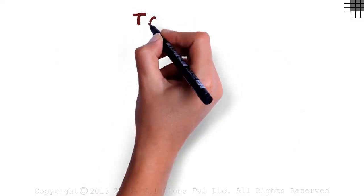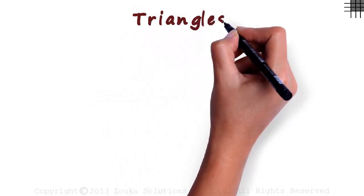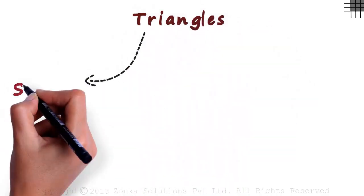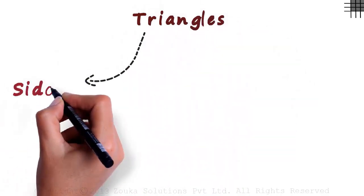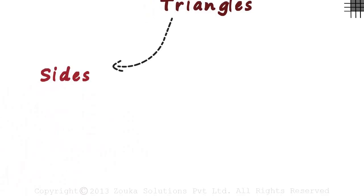How do we classify triangles? One way in which they can be classified is the length of their sides. Let's see how.